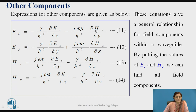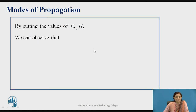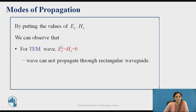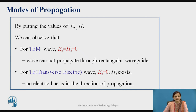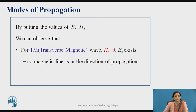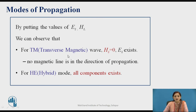By putting the values of Ez and Hz for different modes of propagation: first, consider the TEM mode where both Ez and Hz equal zero — putting these into the above equations makes all field components equal to zero, meaning a wave cannot propagate through the rectangular waveguide in TEM mode. For the TE (transverse electric) mode, Ez equals zero and Hz exists, meaning no electric field line is in the direction of propagation. In TM mode, Hz equals zero, meaning no magnetic field line is in the direction of propagation. For the HE mode, all components exist.